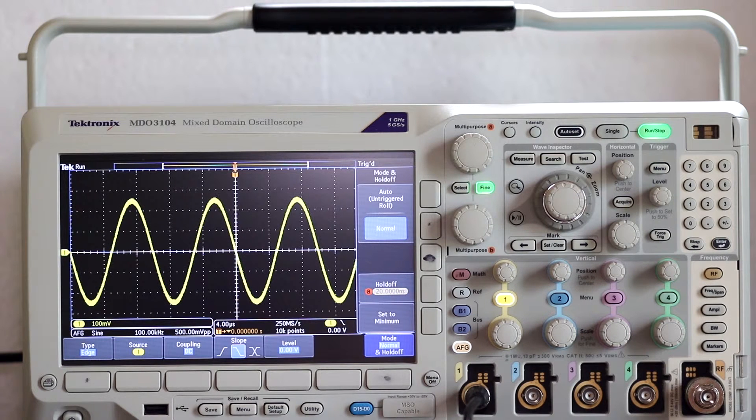Then, multipurpose knob A, with fine deactivated, can be used to select the holdoff time. Again, the keypad is faster. We'll set the holdoff to 6 microseconds. Press 6 on the keypad. Immediately, the units menu comes up, and you can choose microseconds.